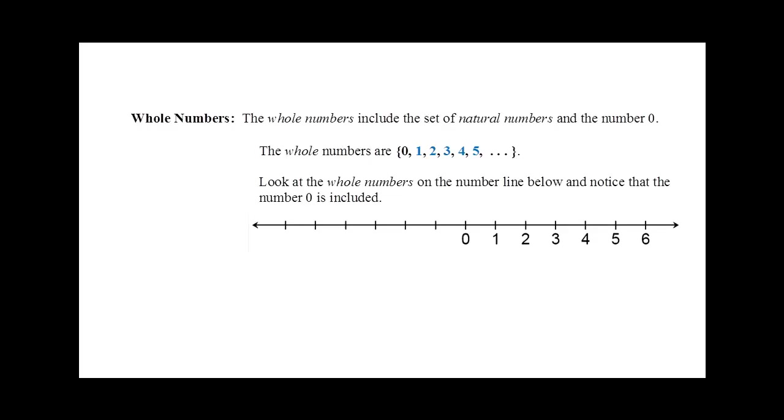The second number system is the whole numbers. The whole numbers include the set of natural numbers and the number 0. The whole numbers start with the number 0 and count 0, 1, 2, 3, 4, 5, 6, etc.